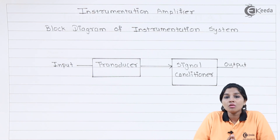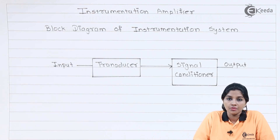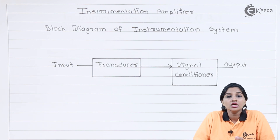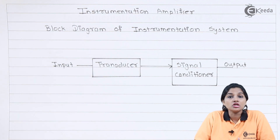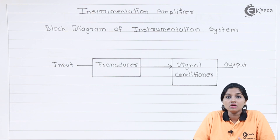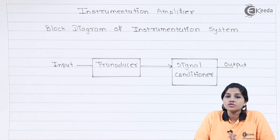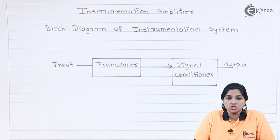For that purpose, we use a block called the signal conditioner. The signal conditioner performs various functions like amplification, attenuation of signal, filtering of signal, sampling, integration, differentiation, addition, subtraction, multiplication, squaring, and many more operations. When these operations are performed on the signal, the signal gets into a form so that it can drive the further instrumentation system. This is basically the need of signal conditioning. Now let's move to the block diagram of the instrumentation amplifier.